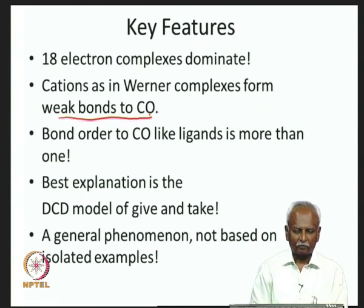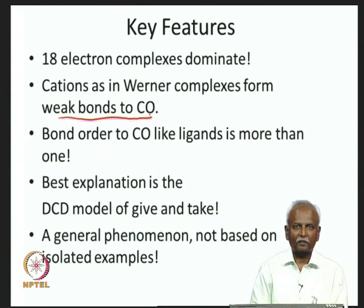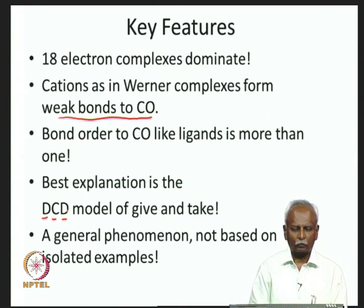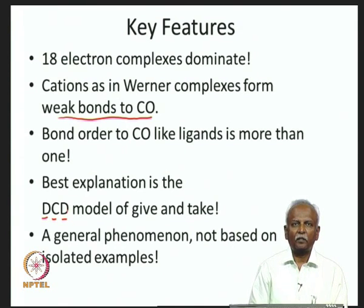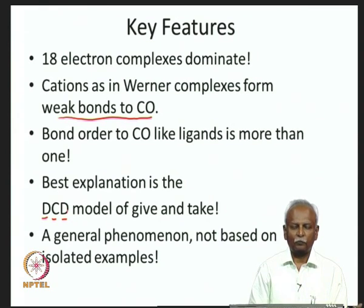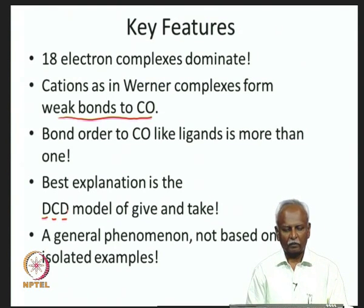The best explanation for these factors observed with metal carbonyls is the DCD model — the Dewar-Chatt-Duncanson model — named after the three people Dewar, Chatt, and Duncanson, who initially described this give-and-take sharing of electrons. The ligand gives electrons to the metal, and the metal in turn gives electrons back to the ligand. This give-and-take phenomenon is synergistic, and it leads to a very stable situation in metal carbonyl chemistry.